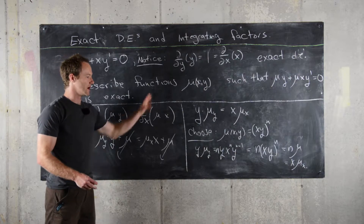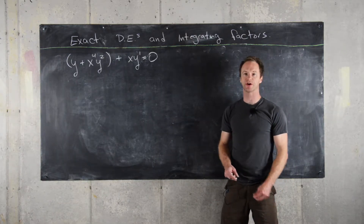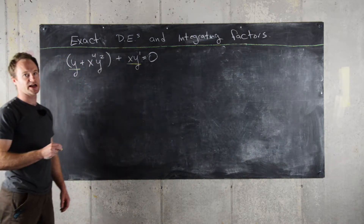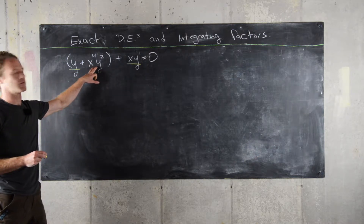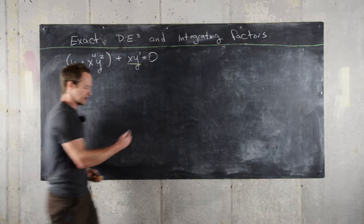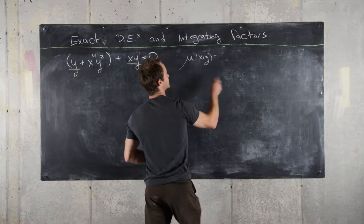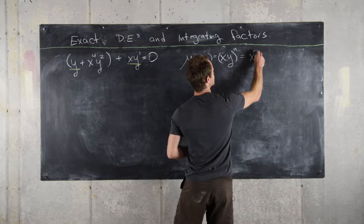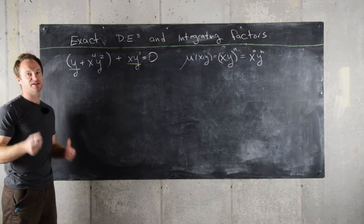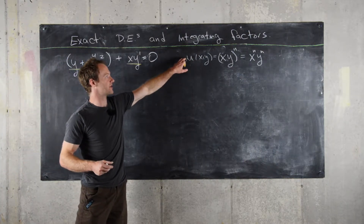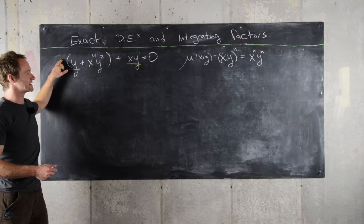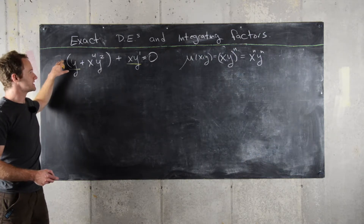Next we consider the differential equation x⁴y² + y + x·y' = 0. This is built from parts of our previous differential equation — we have y + x·y' = 0 — but with the new term x⁴y². We know that multiplying y + xy' = 0 by μ(x,y) = (xy)^n = x^n·y^n keeps it exact. We'll use this as motivation to find an integrating factor μ to transform the new, non-exact equation into an exact one.